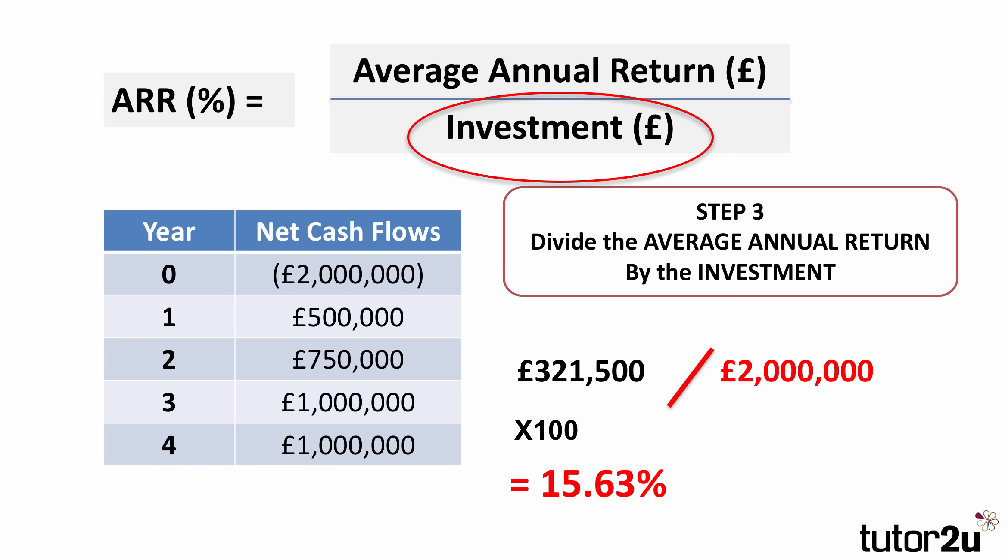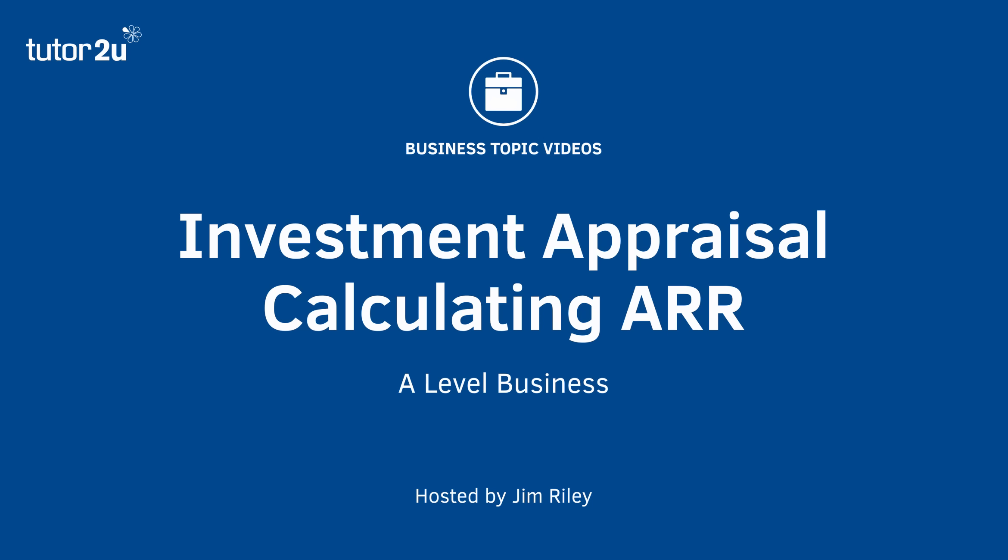The ARR for this project is 15.63%. Don't forget with ARR, the key thing is to remember to deduct the cost of investment from the net cash flows when calculating the total return of the project. Hopefully that's been useful — that's a quick overview of how to calculate ARR.